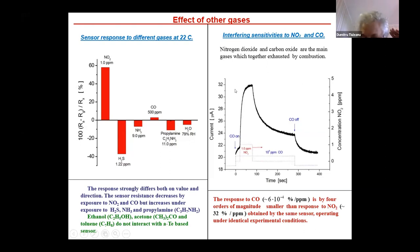Important for us was the interfering effect of two gases: exhaust from combustion. This picture shows the interfering effect. In fact, two concomitant pulses of gases of 1 ppm of NO2 and 10,000 ppm of CO have been applied. The response of sensor to CO is by four orders of magnitude smaller than the response to NO2 obtained by the same sensors operating in identical experimental conditions.